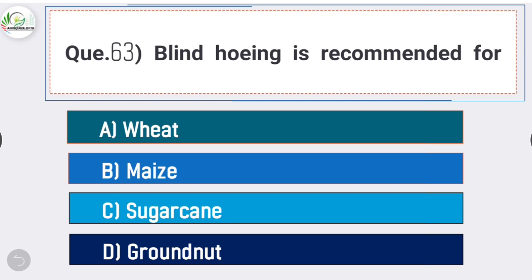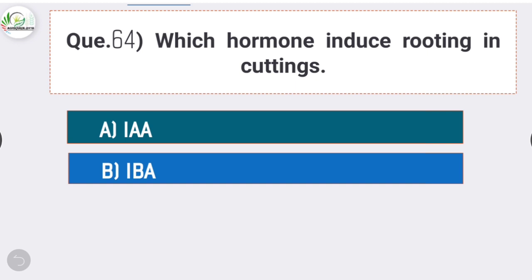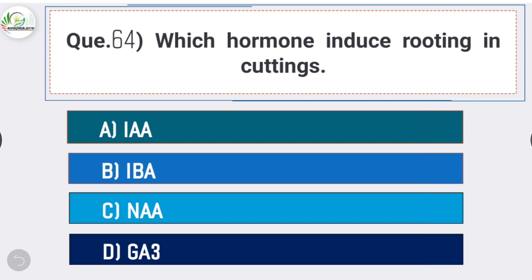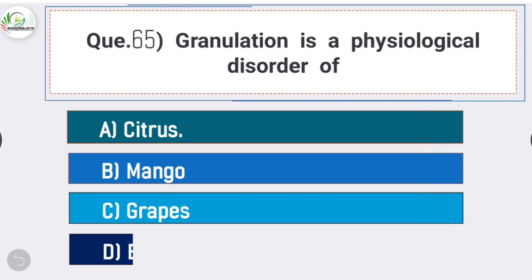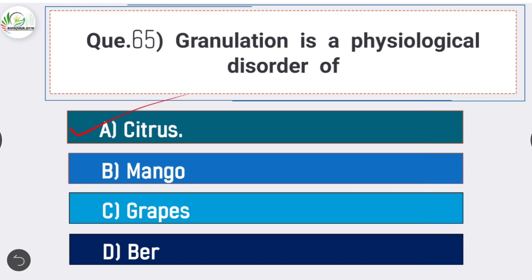Question number sixty-three: blind hoeing is recommended for - answer is option C - sugarcane. Blind hoeing is recommended for sugarcane. Question number sixty-four: which hormone induces rooting in cuttings? Answer is option B - IBA. IBA is the hormone used for inducing rooting in cuttings. Question number sixty-five: granulation is a physiological disorder of - answer is option A - citrus.